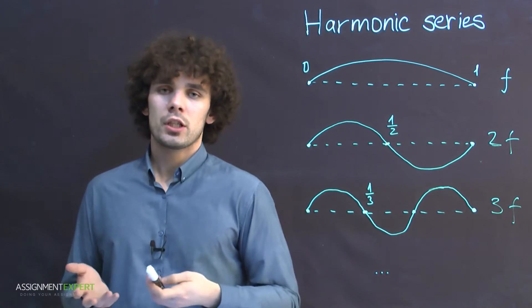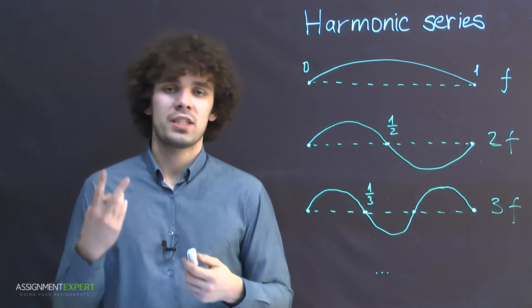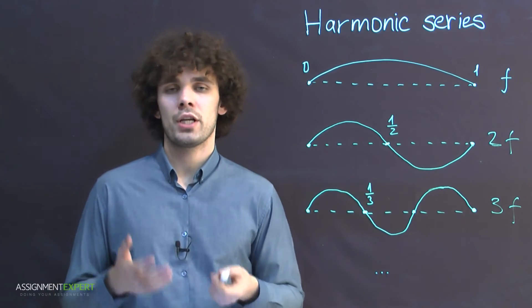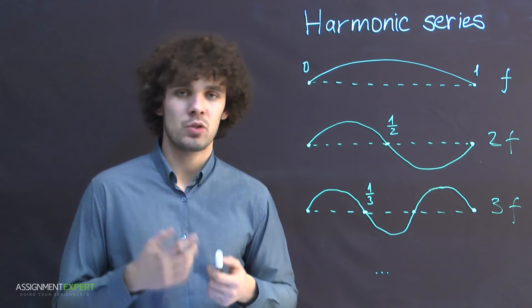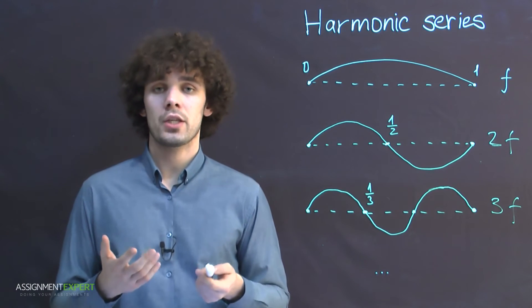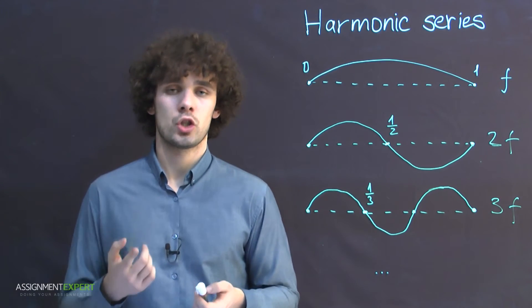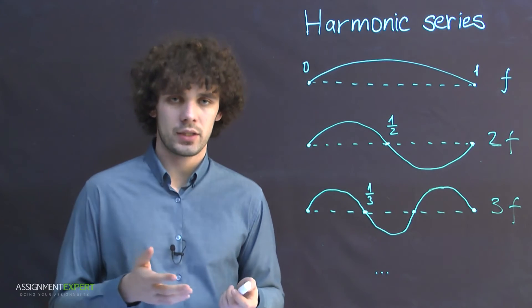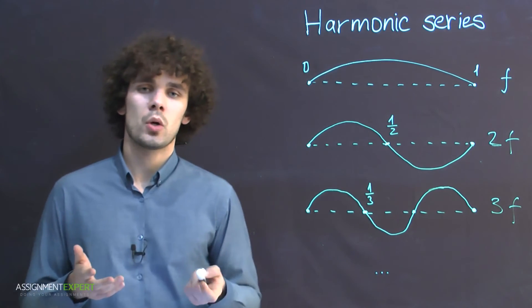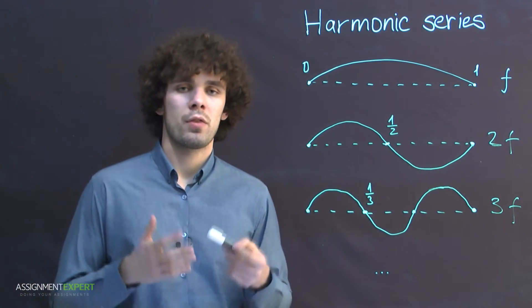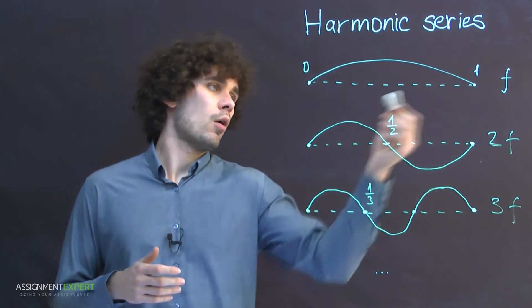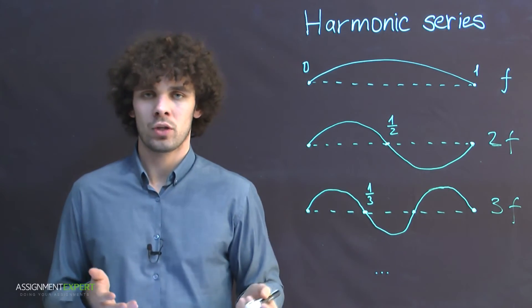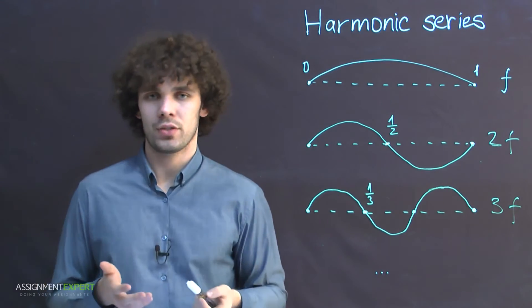Take a particular string, for example, the second string of a six-string guitar. When pitched, it vibrates 110 times per second. You may think that you hear just one particular tone, but in fact you hear several tones simultaneously. These tones are tones with fractional length of the main tone: one-half, one-third, one-fourth and so on, comprising the harmonic series.